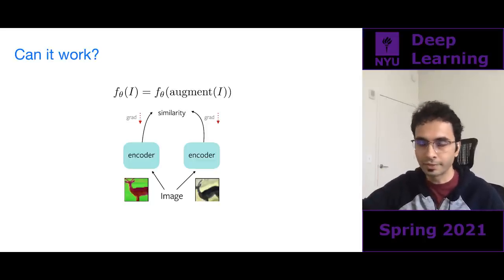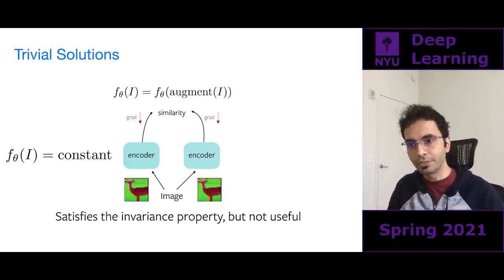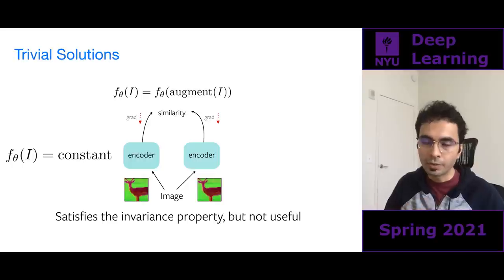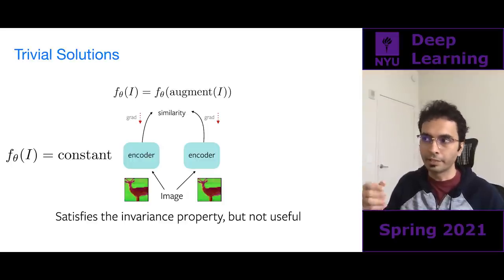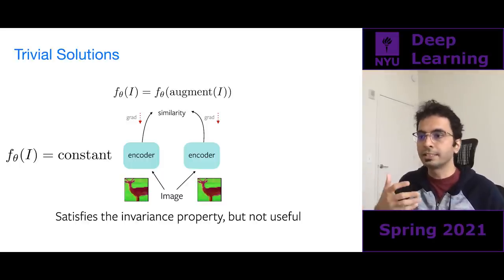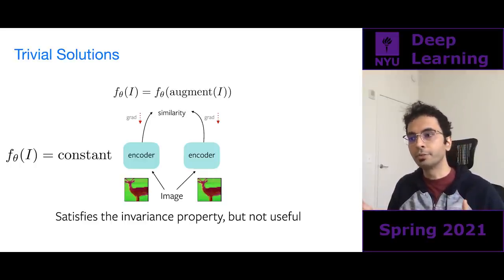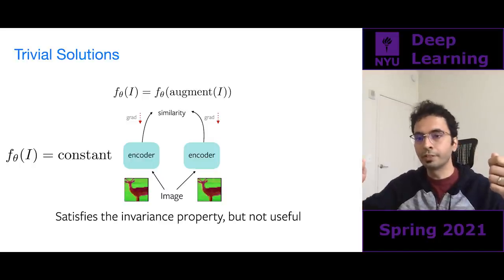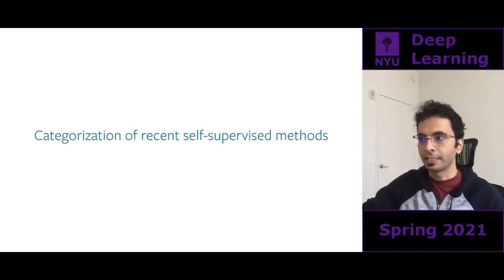The problem is that with this naive approach you fall into the trap of trivial solutions. The network learns to essentially ignore the image input and produce a constant representation. This constant representation satisfies f_theta(i) = f_theta(augmented i), but it produces the same feature no matter what image you feed in — it won't capture how images are related to one another. It will produce the same feature for a deer, a tiger, and a tree.